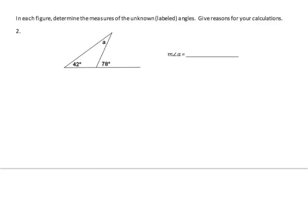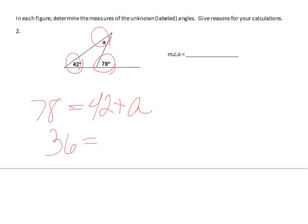In each figure, determine the measures of the unknown angles and give reasons. Here we have an exterior angle, so 78 equals 42 plus a. That gives 78 minus 42, and my reason is the exterior angle equals the sum of the opposite interior angles — the remote interior angles.